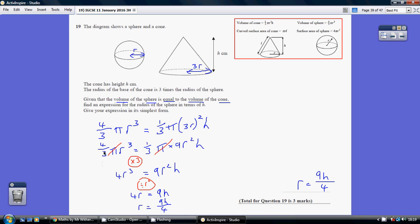And then let's just multiply by three to get rid of this division by three. So we get four R cubed equals nine R squared H.